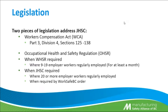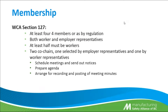Next is the membership. Under the Workers' Compensation Act, Section 127, in order to qualify as a committee, you need to have at least four members. You have to have representation from both the worker and the employer groups, and a minimum of 50% must be workers. Part of the requirement is for two co-chairs — one from the employer representatives and one from the worker representatives. Their duties are to schedule meetings and send out notices, prepare the agenda for each meeting, and arrange for recording and posting of the meeting minutes.